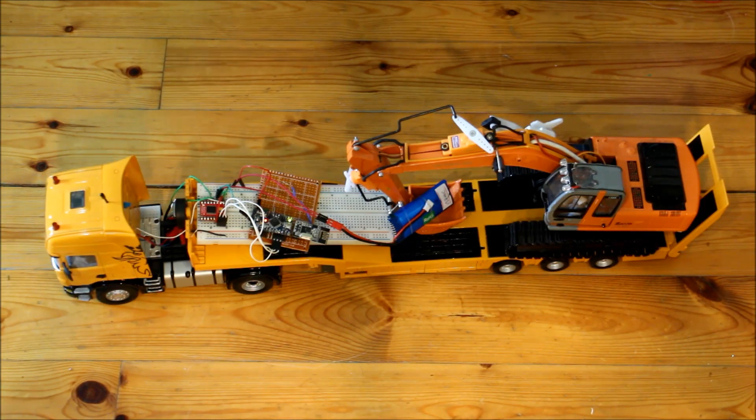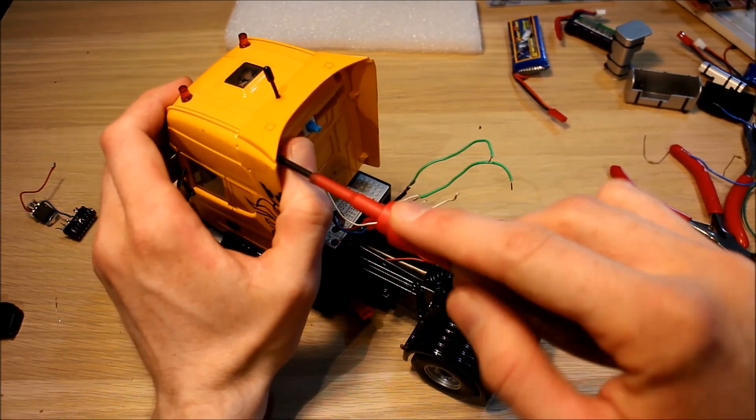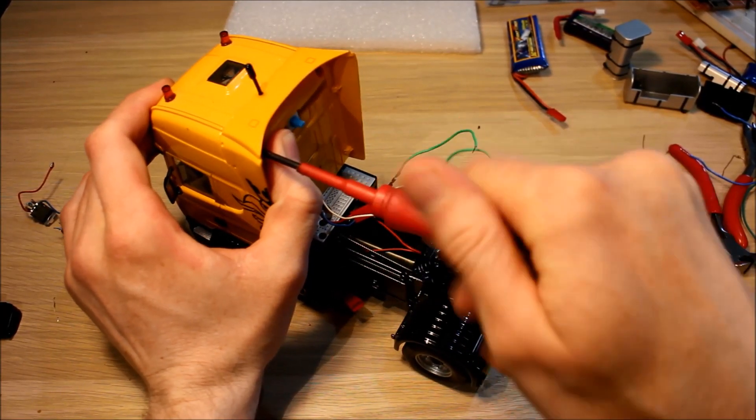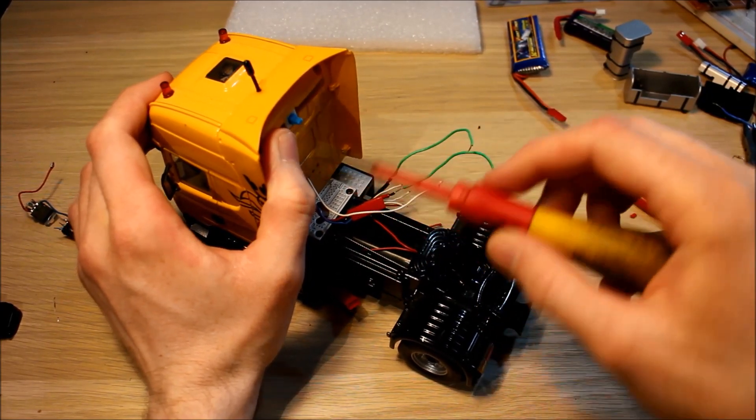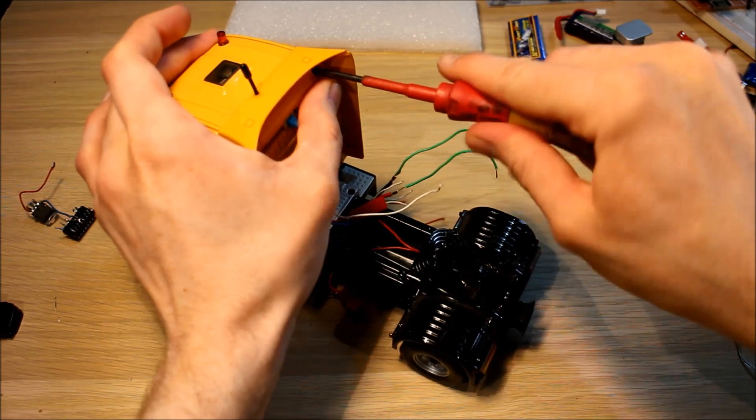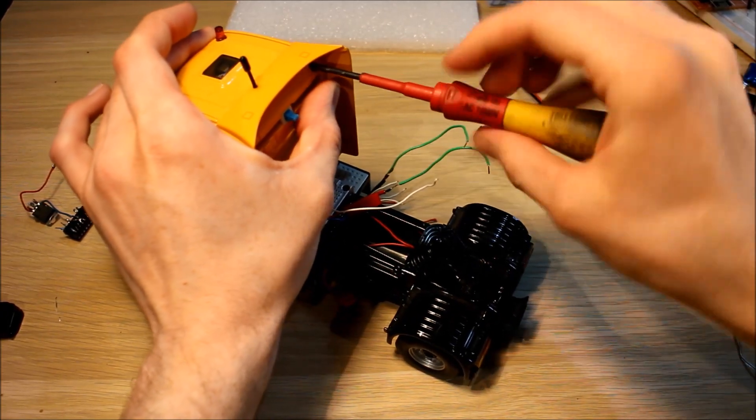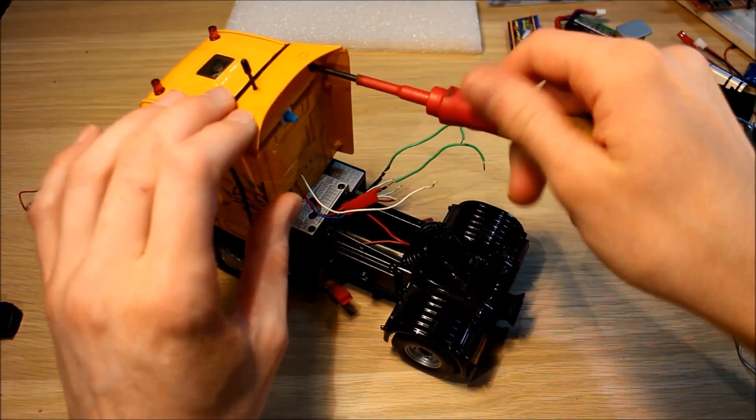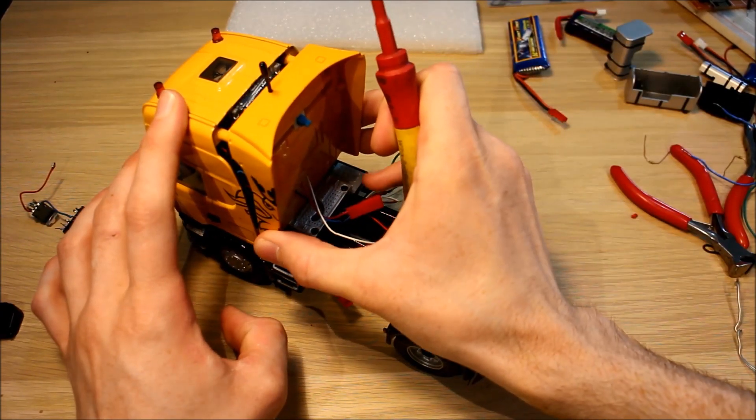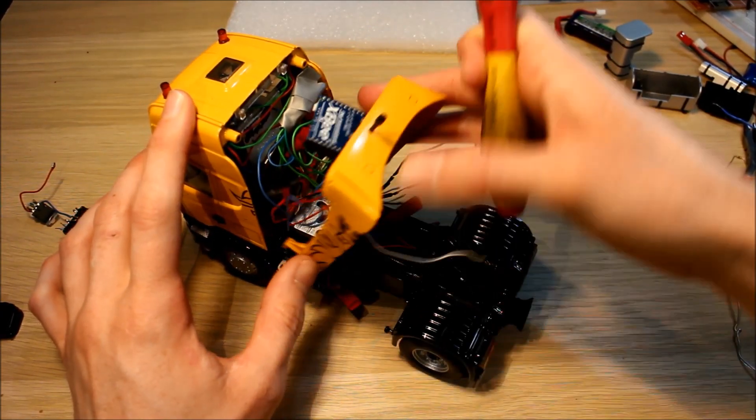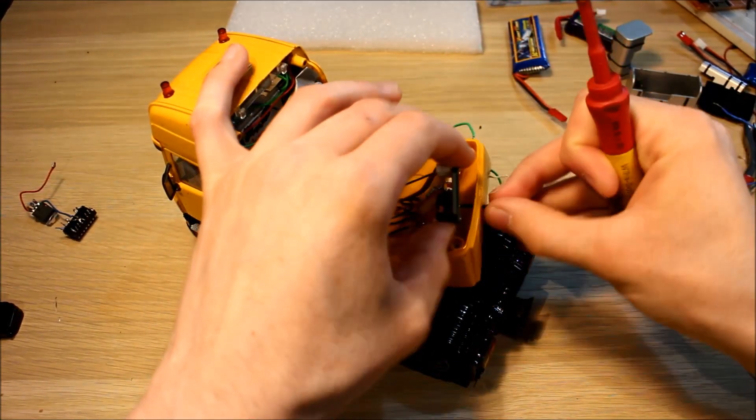So the next thing to check out is the LEDs. Most of them are in the cab itself, and all the wires are going to the Arduino which is in the cab. So easiest way to do this is to just cut the wires off the Arduino and we can measure them there.